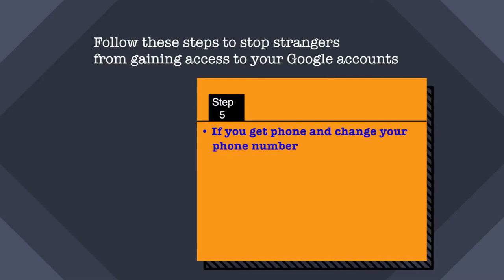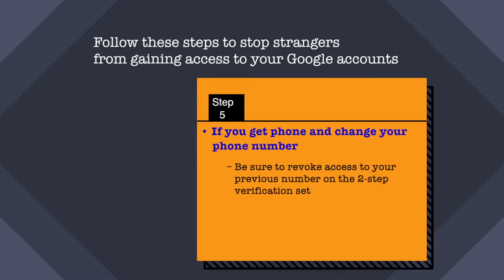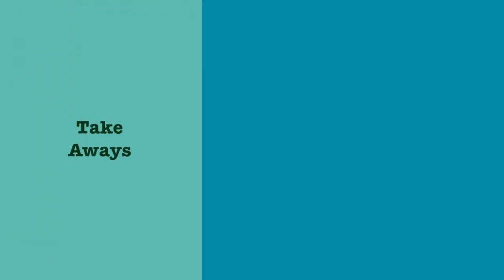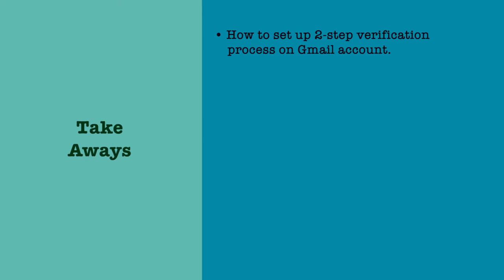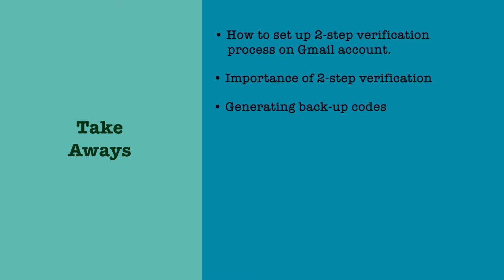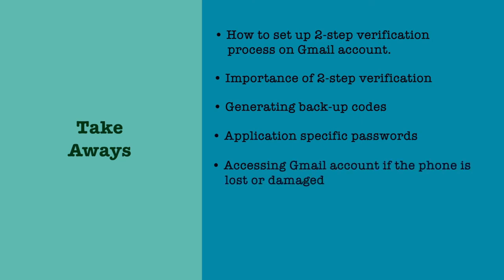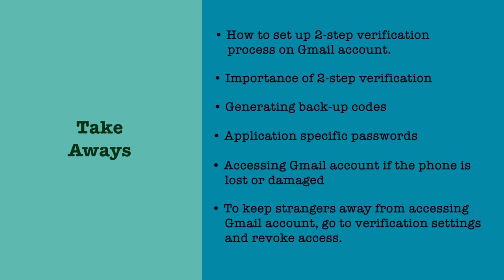If you get a new phone and change your number, be sure to revoke access to your previous number on the two-step verification page. To summarize: we have learned how to set up the two-step verification process on Google accounts, the importance of having two-step verification, how to generate backup codes when you don't have access to your phone, how to set application-specific passwords for smartphones, how to access your Gmail account if your phone is lost or damaged, and how to revoke access from all devices and apps you have granted access to your Google account.